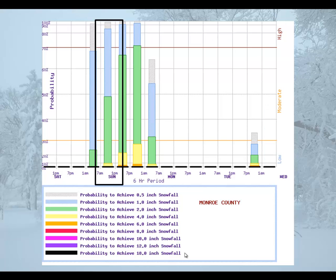Let's read this graph for a six hour time period averaged over Monroe County. From 7 a.m. to 1 p.m. on Sunday, there is a 98 percent chance of reaching one half of an inch of snowfall, and I can tell that by the gray bar reaching up to 98 percent and then the gray color matching the probability to achieve a half inch of snowfall.